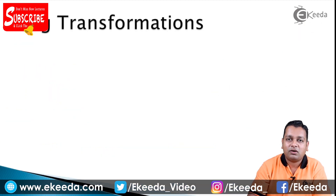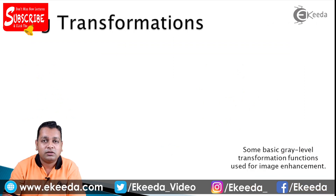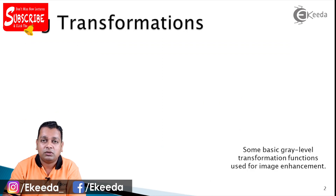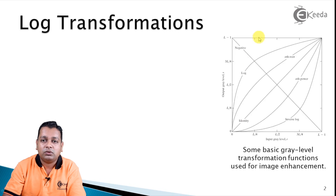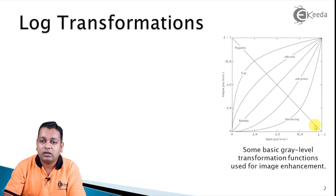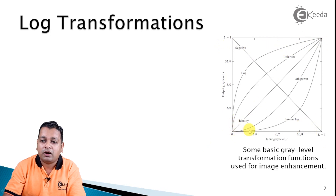For log transformation, we can first look at the representation of all the basic gray level transformation functions, which were shown in the earlier case as well — these are used for image enhancement purposes. This diagram shows three types: linear, logarithmic, and power transformation. The image negatives and identity function are represented by the two diagonals of the square, along with the logarithmic transformation, inverse logarithm, and the nth root — that is the power transformation.